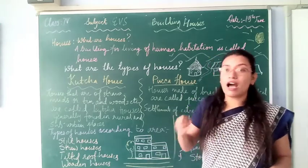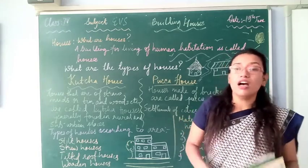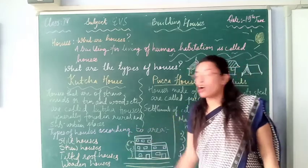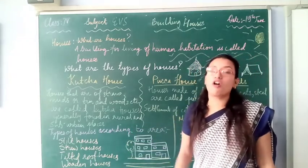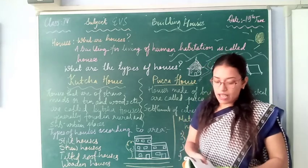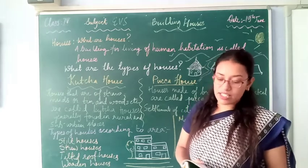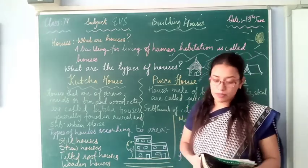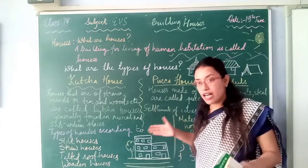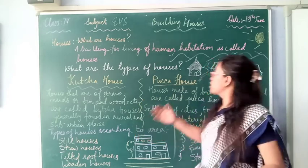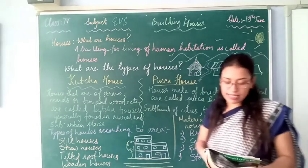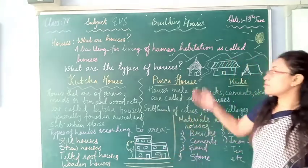Stilt houses are made according to the climatic factors that impact their settlements. Poles are dug and inserted into the ground, and houses are built on top of them. Straw houses are houses that are made up of straw or have straw roofs. In places like Rajasthan, which receives less rainfall and is very dry and hot — a desert region — the rural areas have thick mud walls covered with straw roofs, which scientifically helps to keep the house cool.